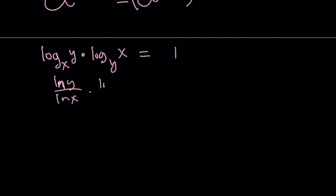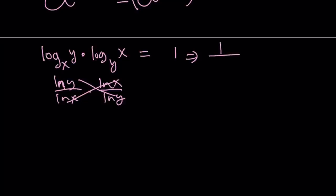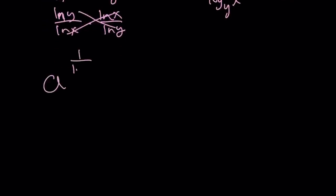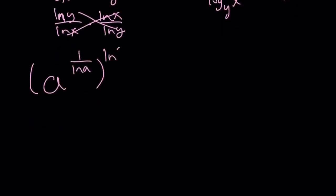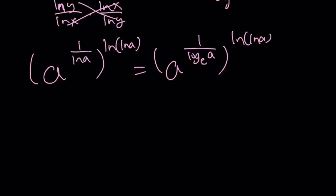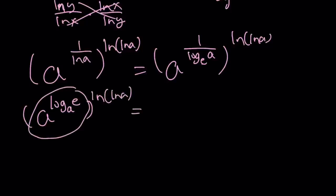From this we get the identity that 1 over log_x(y) just switches the numbers around. So we have a to the power 1 over ln a, which can be written as a to the power 1 over log_a(e) with base e. When you switch e and a around, this becomes a to the power log_e(a) with base a, which is just e. So we get e to the power ln ln a, and as you know, that is equal to ln a. This concludes the fourth method.